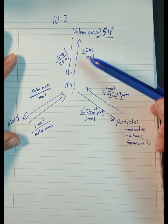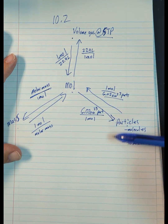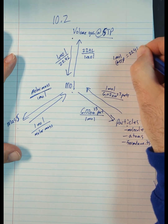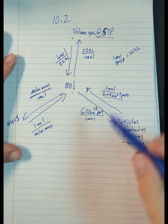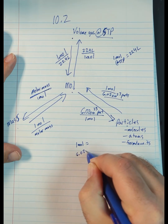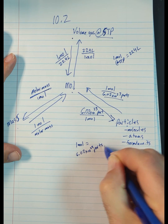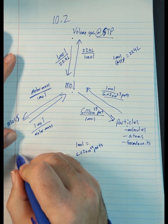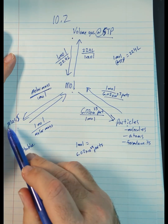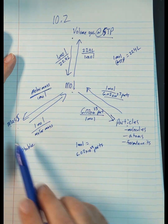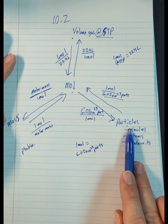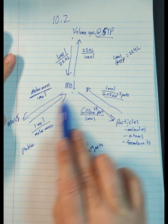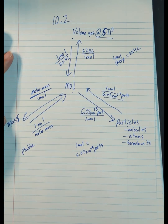You have this roadmap: as long as you know one mole at STP equals 22.4 liters, you can convert between mole and volume. As long as you know one mole equals 6.02 times 10 to the 23rd particles — whether atoms, molecules, or formula units — you can convert between moles and particles. As long as you know how to find molar mass from the periodic table, you can convert between mass and moles. That means you can go from mass to moles to particles, or particles to moles to volume, or volume to moles to mass, and so on. Have a good day and stay curious.